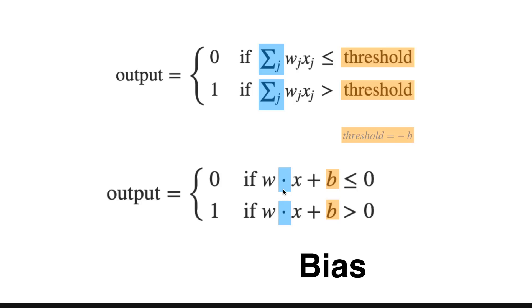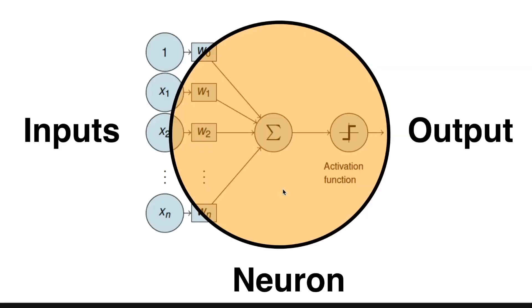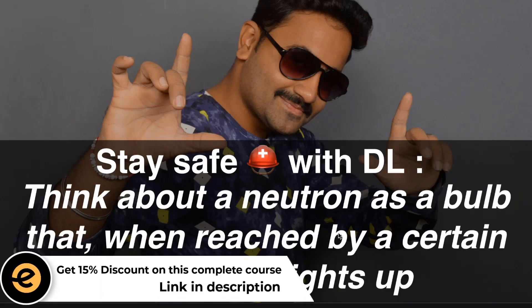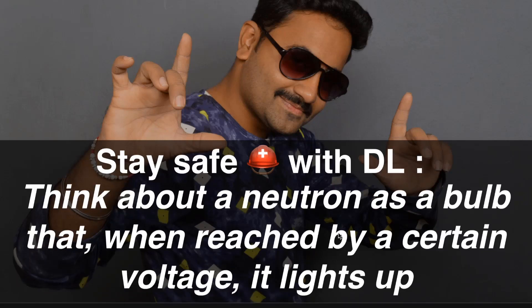Let me wrap up this section and share the main message. We have defined what a neuron is: the basic unit of a neural network, whether shallow or deep. Each neuron takes inputs and provides an output. When you think about a neuron, really think about a light bulb — when reached by a certain threshold voltage, it lights up. That analogy should help you fix in your memory what a neuron is and how it works.